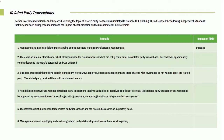In our second situation, there was an internal ethics code which clearly outlined the circumstances in which entities could enter into related party transactions, and it was appropriately communicated. That is going to decrease the risk of material misstatement. In our third one, business proposals initiated by certain related parties are always approved — sounds like somebody has leverage over the company, because management and those charged with governance don't want to upset the related party. That's too much influence, and therefore that increases the risk of material misstatement.